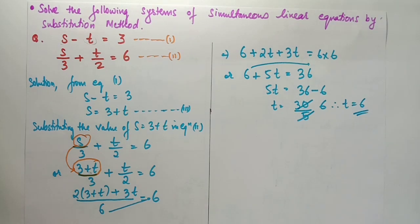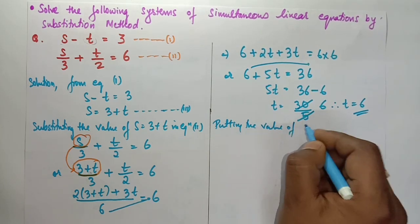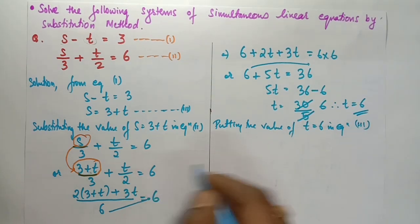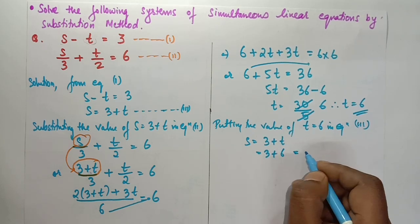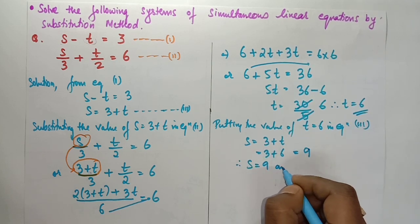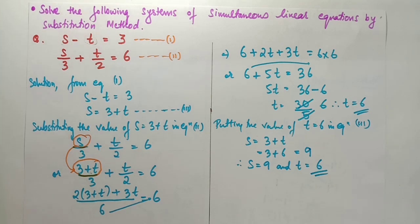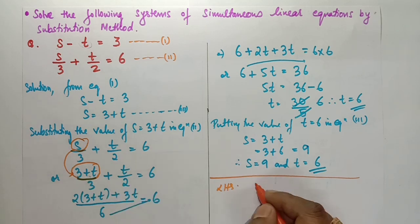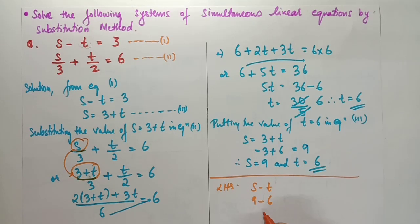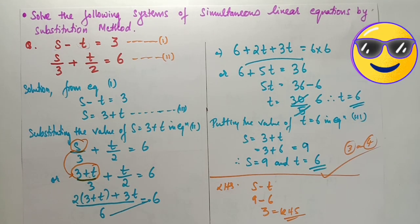Dividing both sides by 5: t equals to 30 divided by 5, therefore t equals to 6. Now putting t equals to 6 in equation three: s equals to 3 plus 6, therefore s equals to 9. Final answer: s equals to 9 and t equals to 6, which will get 3 or 4 marks. To verify: left-hand side of equation one is s minus t equals to 9 minus 6 equals to 3, which matches the right-hand side. The answer is correct. Now let's solve another question.